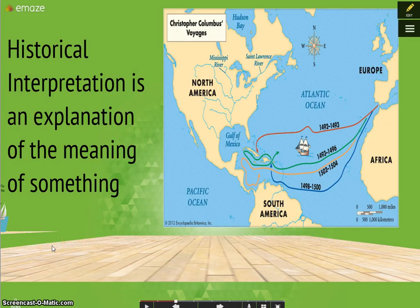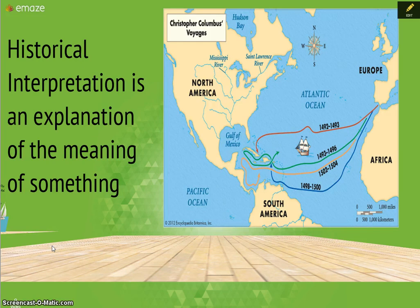According to your textbook, historical interpretation is an explanation of the meaning of something. If we're studying Columbus, for example, we can use this map to talk about a historical interpretation. To Christopher Columbus, he believed that if he sailed westward he would eventually find a route to Asia, and primarily India.